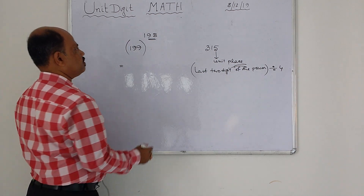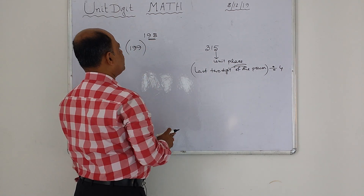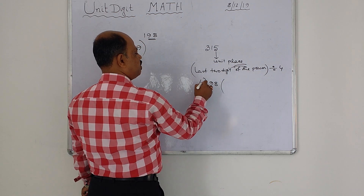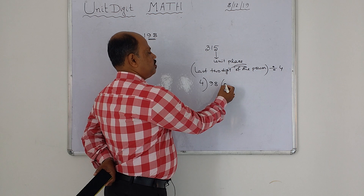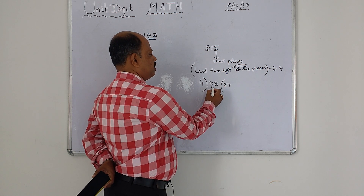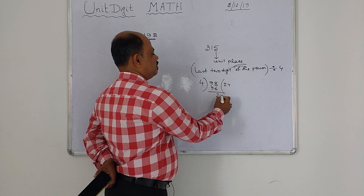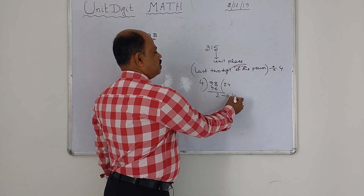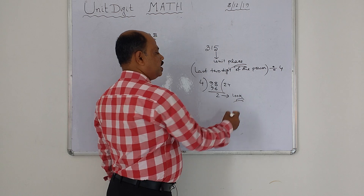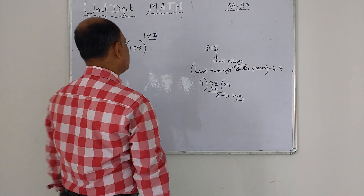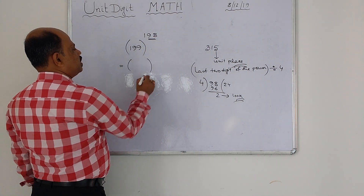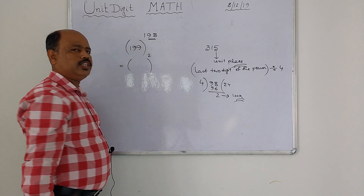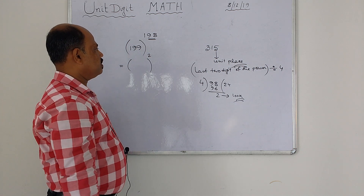Look here — what are the last two digits of the power? Ninety-eight. So, ninety-eight divided by four. After division, you see that there is a remainder: two. The remainder is two. Then, that remainder you have to write as the power.